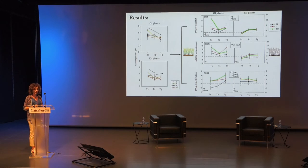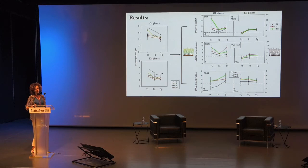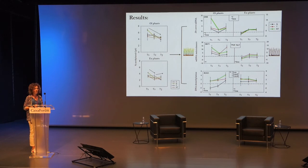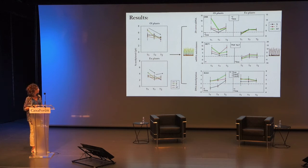Differences among plants were also clear when analyzing specific genes involved in de novo DNA methylation, its maintenance, and DNA demethylation. In general, all genes were influenced by the time of stress exposure, and temperature was the main driver of these differences.